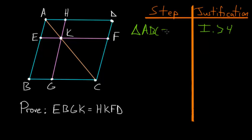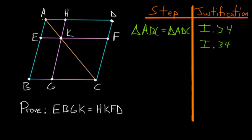So we write that triangle ABC is equal to triangle ADC. With the same logic, using Book 1, Proposition 34, we look at line AK, which bisects the parallelogram AEKH. So triangle AEK is equal to triangle AHK.